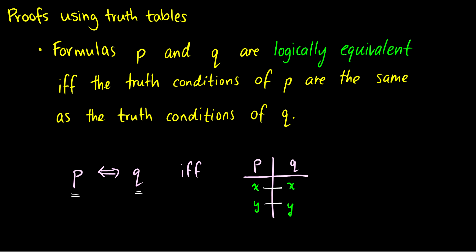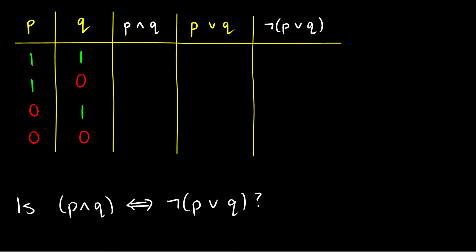Let's jump straight into an example. I want to know if P∧Q is logically equivalent to ¬(P∨Q). First, we build our truth table for P and Q — for all of our propositions. Then we piece together, one connective at a time, everything we need to get both statements. For P∧Q, we put P and Q together. For ¬(P∨Q), first we compute P∨Q in the fourth column, then add the negation in the fifth column.